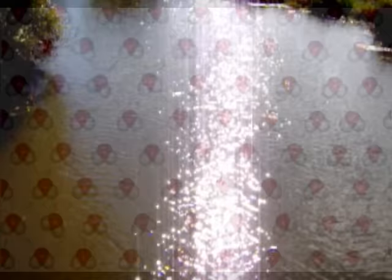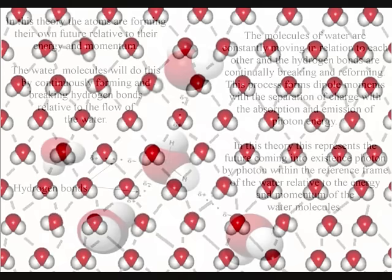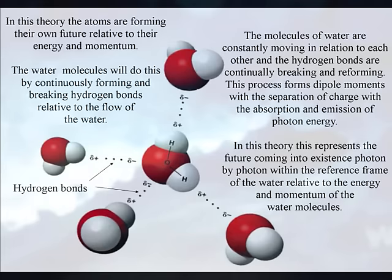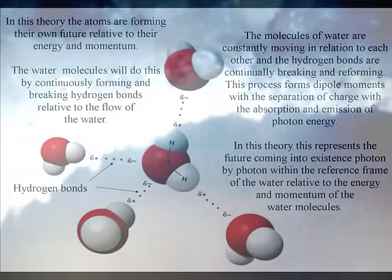This process is relative to the temperature of an individual reference frame. When the temperature decreases, there is less photon energy for the breaking and reforming of hydrogen bonds. This forms a phase change of matter from flowing fluid to solid in the formation of ice crystals.